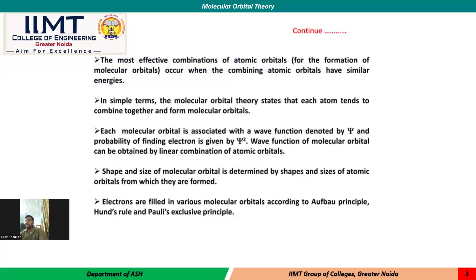The most effective combination of atomic orbitals occurs when the combining atomic orbitals have similar or nearly equal energies, for effective combination. In terms of molecular orbital theory, atoms tend to combine together and form molecular orbitals. Each molecular orbital is associated with a wave function denoted by psi, and the probability of finding an electron is given by psi squared.